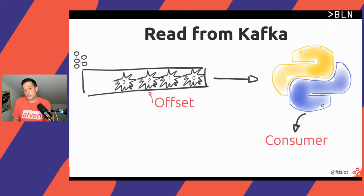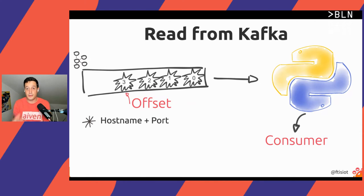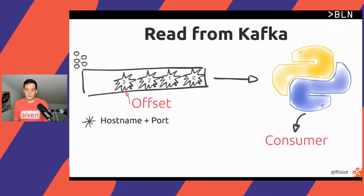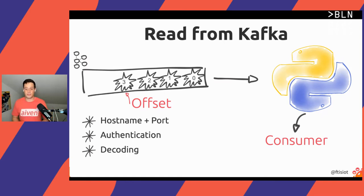In order to consume data from Kafka, all that the consumer needs to know is pretty much the same information as the producer: hostname and port, how to authenticate to Kafka, and now how to deserialize — decode from raw series of bytes to, for example, JSON. The last information is where to find the data: which topic or list of topics the consumer wants to read from.